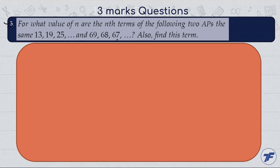Now the next question: for what value of n are the nth terms of the following two APs the same? 13, 19, 25, and so on is the first AP, and 69, 68, 67, and so on is the second AP.